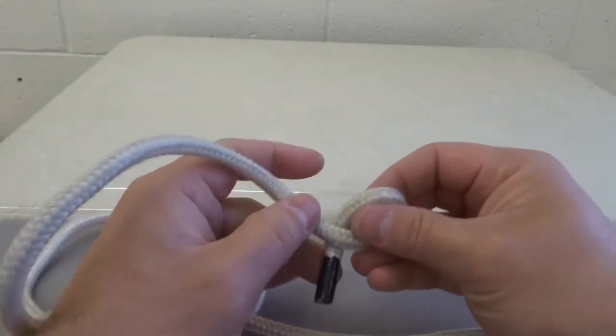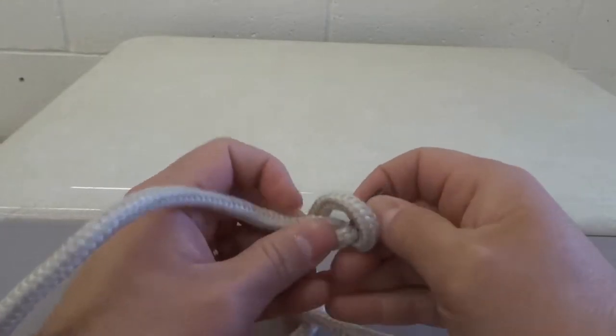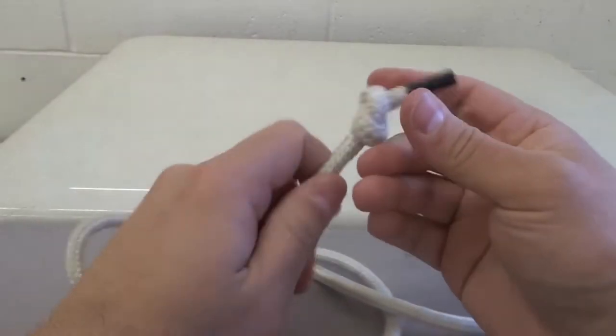So you're gonna get the end of your rope that you want to be working with and just tie an overhand knot just like that. This is gonna be your stopper knot to make sure that it doesn't go anywhere.